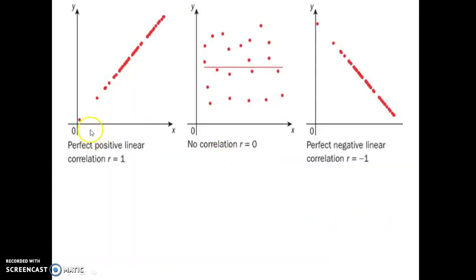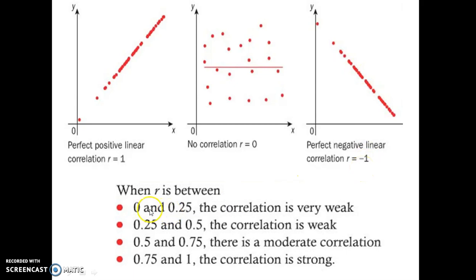Looking further, we see here a perfect positive correlation. See, the points are perfectly lined up. There's no scatter at all. So R equals 1. Here's no correlation, 0. Here's a perfect negative lined up in a line, negative 1. Here's some rules you should know. When R is between 0 and 0.25, the correlation is very weak. From 0.25 to 0.5, it's weak. From 0.5 to 0.75, it's moderate. And from 0.75 to 1, it's a strong correlation. Please pause and make sure you add these to your notes as well.